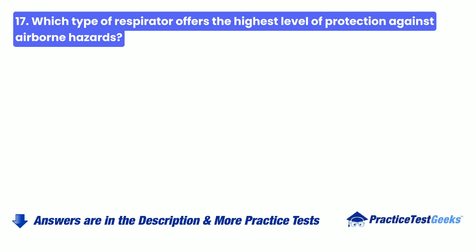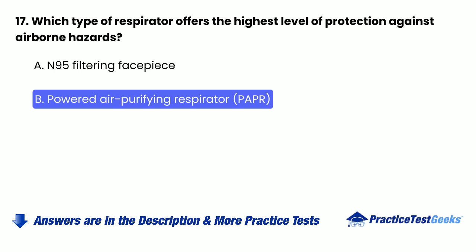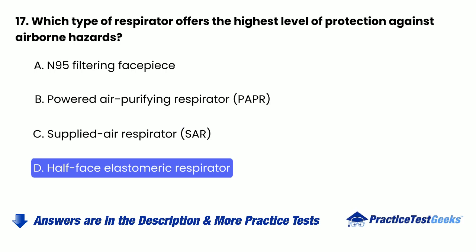Question 17: Which type of respirator offers the highest level of protection against airborne hazards? A. N95 filtering facepiece. B. Powered air purifying respirator (PAPR). C. Supplied air respirator (SAR). D. Half-face elastomeric respirator.